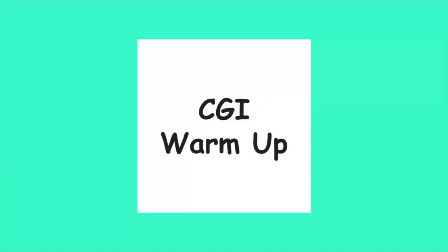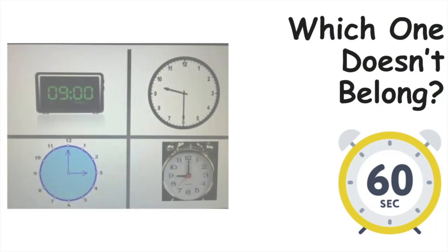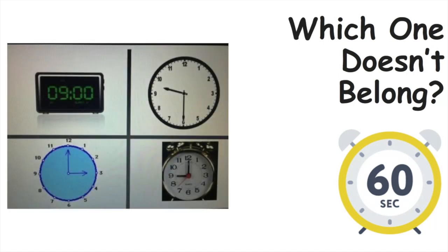We're going to begin our lesson with a CGI math warm-up called Which One Doesn't Belong? I'm going to show you a picture of items, and I want you to think about which one doesn't belong. You're going to have 60 seconds to think about the image. Here is our picture — take the 60 seconds to think about which one doesn't belong, and why.